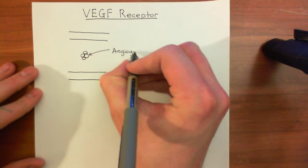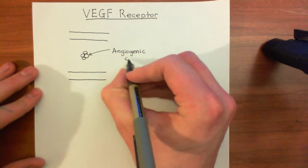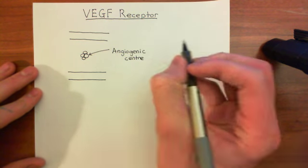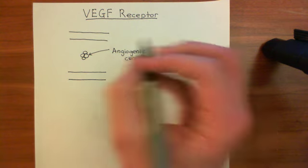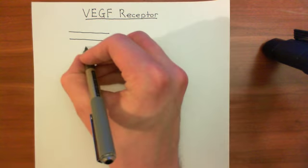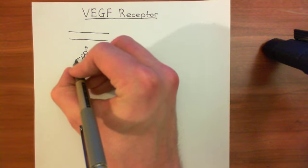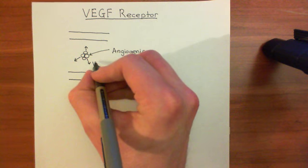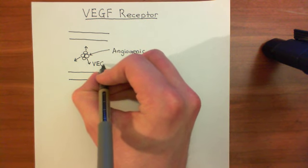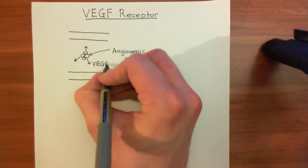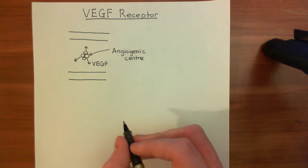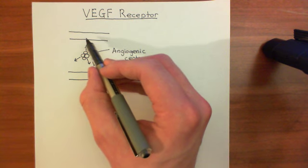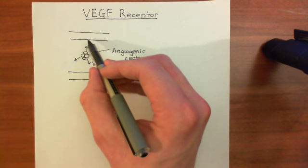When cells become hypoxic, these cells are going to start releasing growth factors called vascular endothelial growth factors, or VEGF — the main one being vascular endothelial growth factor A, as we'll see. This is going to act on the endothelial cells of the capillaries and produce angiogenesis.